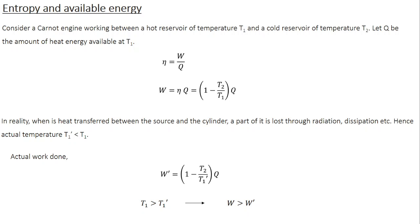When introducing the Carnot engine, an important assumption is that there is no friction or mechanical imperfections. But in reality, any practical heat engine will have friction and other contact forces. When heat is transferred between the source and the cylinder, part of the energy is invariably lost through radiation or dissipation. The friction between surfaces creates energy loss through heat dissipation, and heat is also lost to the surrounding medium by radiation — these losses are inevitable in any practical heat engine.